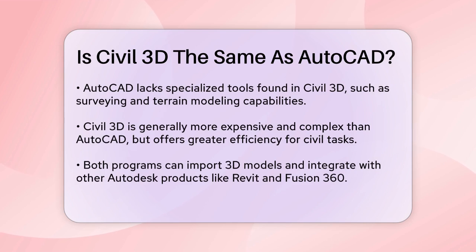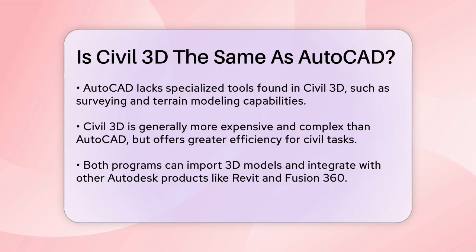Another significant difference is in their cost and complexity. Civil 3D is more expensive than AutoCAD and is generally more difficult to learn. However, it offers greater efficiency and time savings for civil engineering tasks. Civil 3D can perform tasks much faster than AutoCAD, especially when it comes to dynamic updating of design objects and minimizing rework.